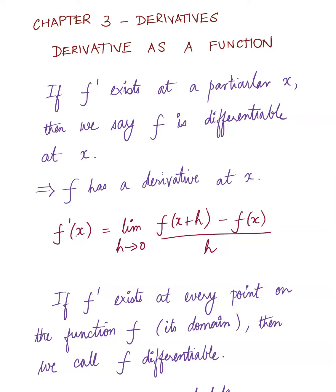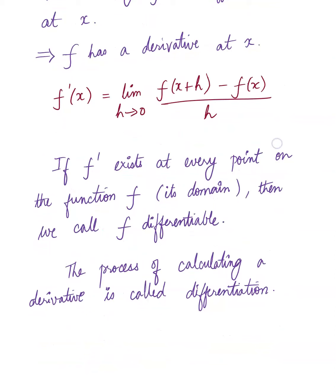So f prime of x equals limit h approaches 0, f of x plus h minus f of x, all over h. And so we say if f prime exists at every point on the function, on its domain, then we call f differentiable. So if a theorem says suppose f is differentiable, that in the background means that f prime of x exists. And the process of calculating a derivative is called differentiation.